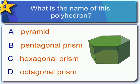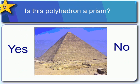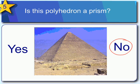What would be the name of this polyhedron? I'll give you a hint — look at the base and count up the sides. Looks like there are six sides in the base, so this would actually be a hexagonal prism. Is this polyhedron a prism? The answer would be no, because a prism has two congruent bases that are parallel, and this just has one base.